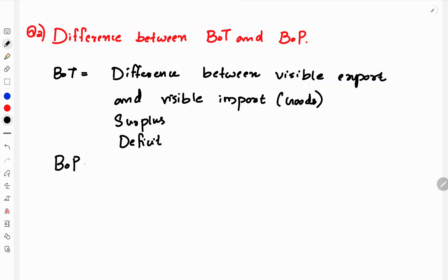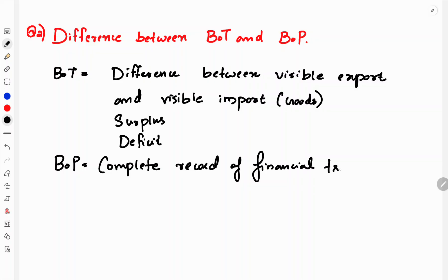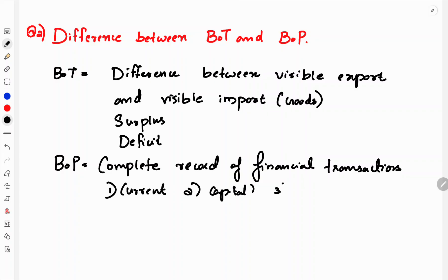BOP is the Balance of Payment — a complete record of financial transactions. Receipts from foreigners are given a credit and positive sign; payments to foreigners are given a debit and negative sign. BOP is classified into four accounts: current account, capital account, official reserve account, and errors and omissions account.